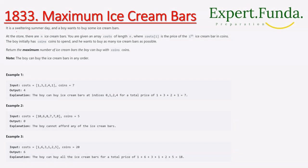The question is about a sweltering summer where a boy wants to buy some ice cream bars. At the store there are n ice cream bars. You are given an array called costs of length n, where costs[i] is the price of the i-th ice cream bar in coins.